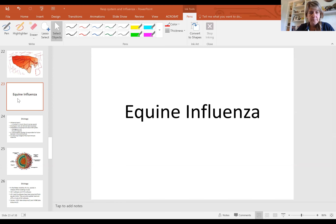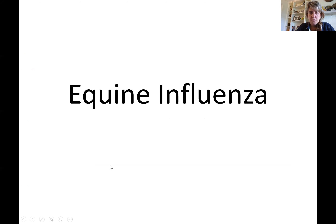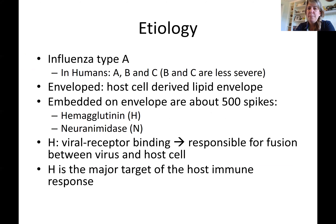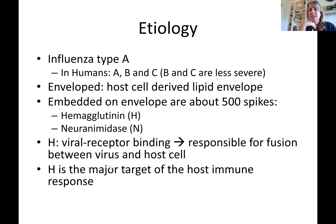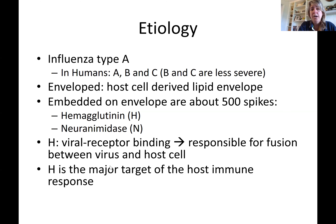Today we're going to talk about equine influenza. Influenza in the horse is Type A — the same type that afflicts horses. In humans we have B and C, with B and C being less severe than Type A. Type A is the more severe type of influenza. It is an enveloped virus, meaning it has a lipid envelope around it, which means it can be easily killed with regular handwashing — soap, detergent, acetone, alcohol — anything that will denature fat will kill this virus.